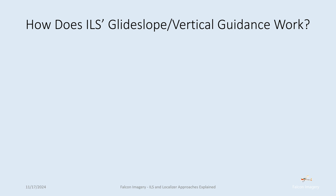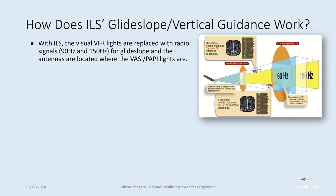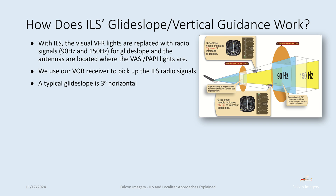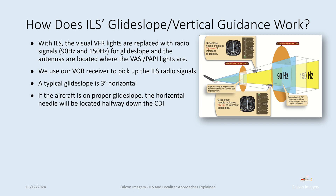So how does ILS glide slope and vertical guidance work? With ILS, the visual VFR lights are replaced with radio signals — 90 Hz and 150 Hz for glide slope — and the antennas are located where the VASI and PAPI lights are located. We use our VOR receiver to pick up the ILS radio signals by tuning the nav side into the ILS frequency. The typical glide slope is three degrees, though it can vary. If the aircraft is on proper glide slope, the horizontal needle will be centered on the CDI.